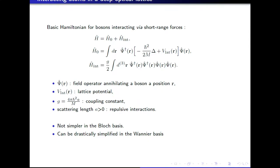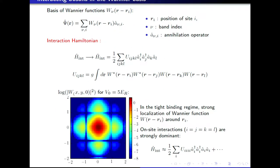In second quantized form, that leads to a Hamiltonian which now involves four operators — two psi-dagger and two psi — where psi annihilates a particle at position r. We can also re-express this interaction Hamiltonian in the Wannier basis. The field operator is developed over the Wannier functions w_nu (for the 3D case), times an operator that annihilates a particle at site i in band nu. When you plug this in, the interaction Hamiltonian is typically very complicated, with matrix elements depending on four site indices in general.